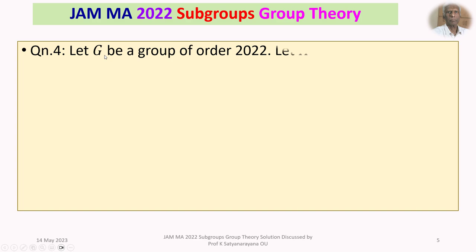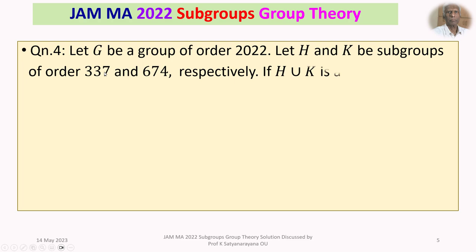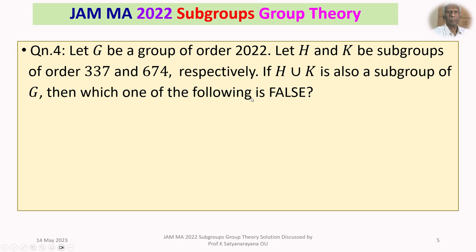The given question is: let G be a group of order 2022. Let H and K be subgroups of order 337 and 674 respectively. If H union K is also a subgroup of G, then which of the following is false?